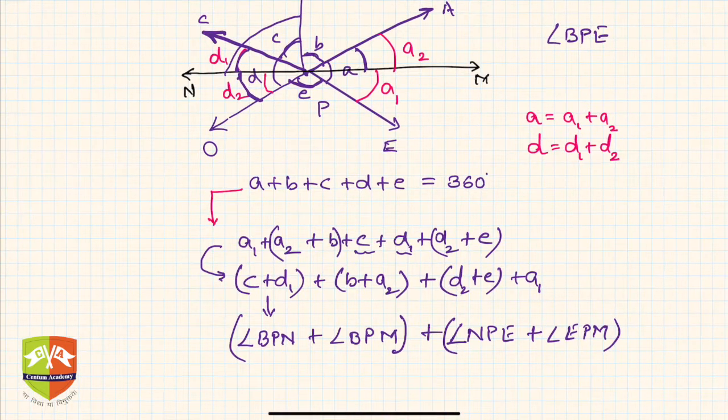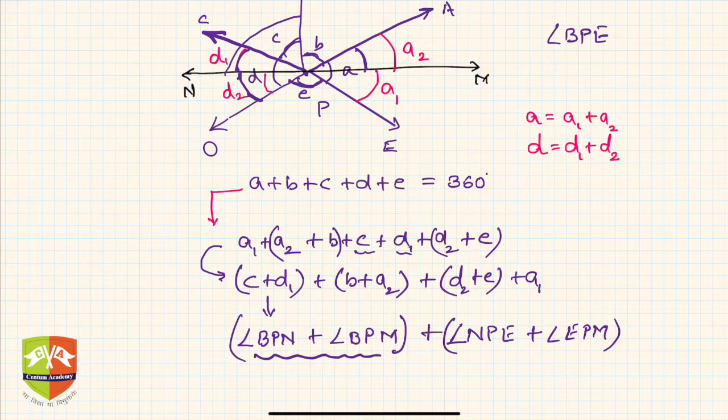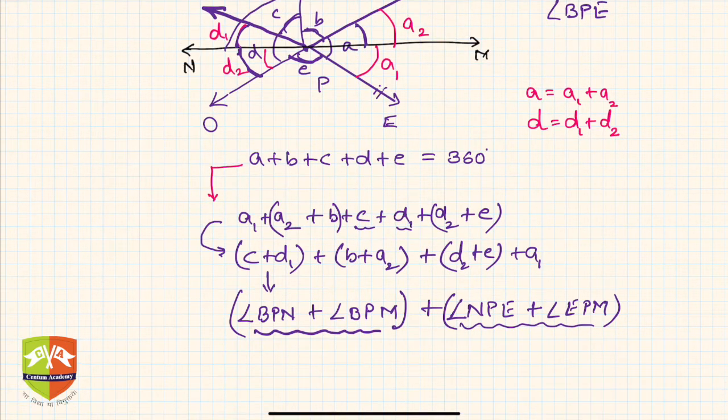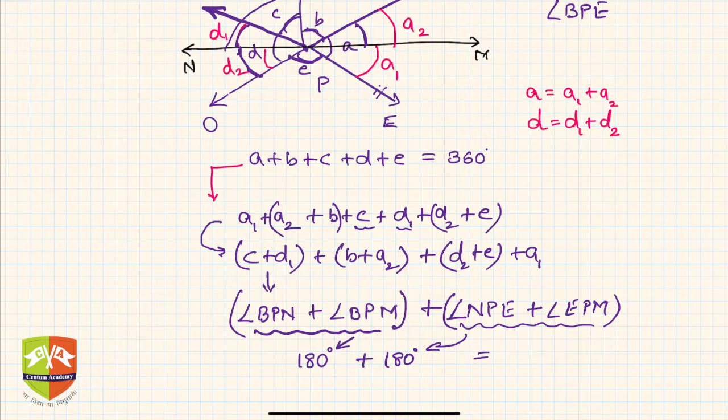Now what is this? If you see closely, this is a linear pair. Ray PB stands on line MN and hence this is a linear pair. And this is also a linear pair where ray PE stands over MN. So hence you can write this as 180 degrees for this linear pair plus another 180 degrees for this linear pair. So hence total is nothing but 360 degrees.